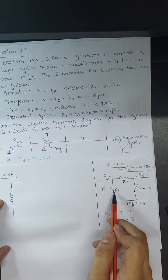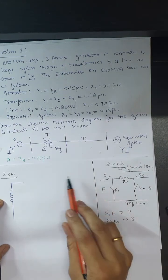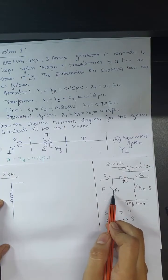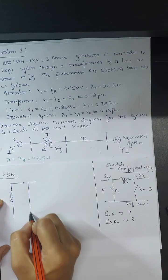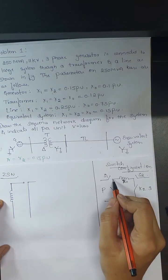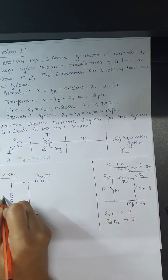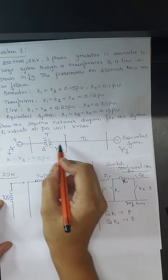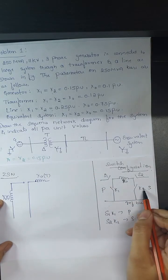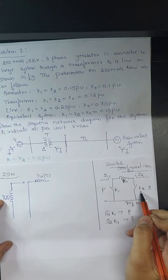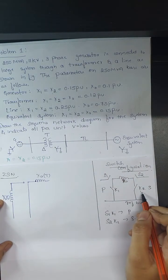Since the primary side is delta: K1 should be closed and S1 should be open. With K1 closed, the next connected component is the reactance X0 of the transformer. For the secondary side, which is star connected with neutral solidly grounded: K2 should be open (no delta), and S2 should be closed since the neutral is solidly grounded.